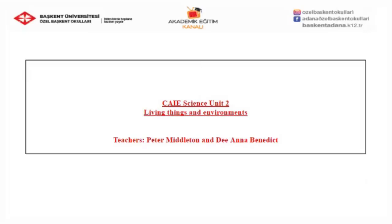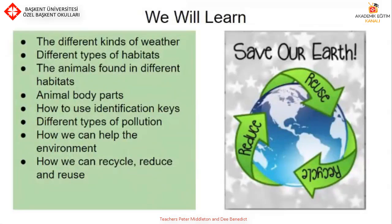Hello and welcome to CAIE Science Unit 2, Living Things and Environments. The teachers for this unit are Peter Middleton and Deanna Benedict. In this video, you will learn the different kinds of weather, different types of habitats, the animals found in different habitats, animal body parts, how to use identification keys, different types of pollution, how we can help the environment, and how we can recycle, reduce and reuse.